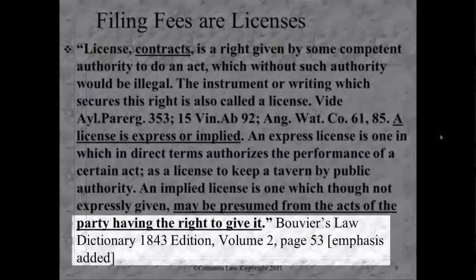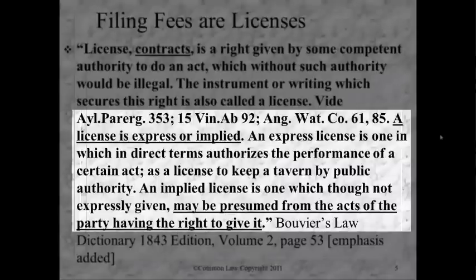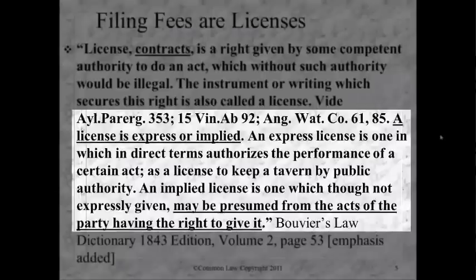This is Bouvier's Law Dictionary, 1843 edition, Volume 2, page 53. It says a license is a contract — a right given by some competent authority to do an act which without such authority would be illegal. The instrument of writing which secures this right is also called a license. A license is express or implied. A filing fee in a court is a license, because you're allowed to proceed in the court — it's an implied license for the privilege of proceeding in their so-called court, and it's only for businesses.